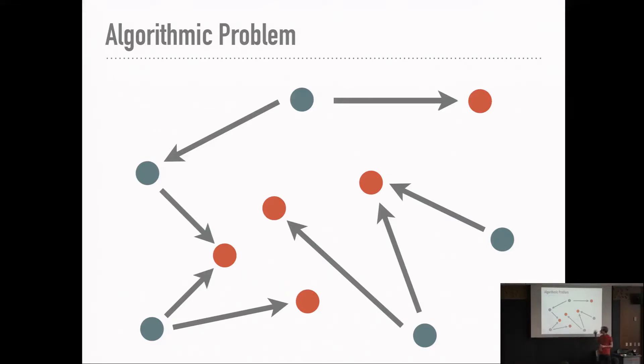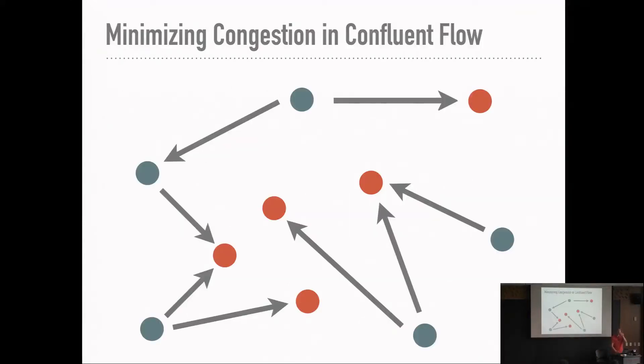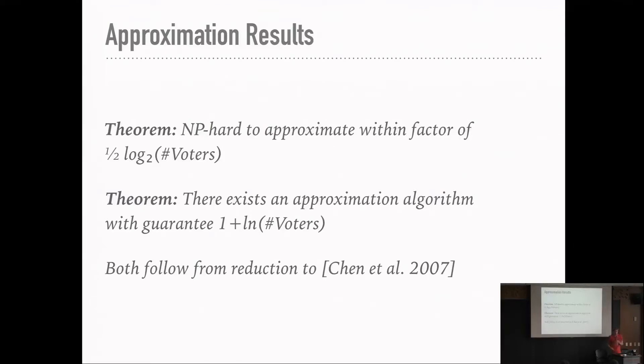If we are concerned about integer linear programs not cutting it, we might consider approximation algorithms, where unfortunately, it is NP-hard to approximate this problem up to within a logarithmic factor, but at least we do have an approximation algorithm that grants us a slightly worse logarithmic factor. Both of these results follow from a reduction to confluent flows, and we're building up on this work by Chen et al. I'd just like to speak about that reduction for a moment. What was the objective? Minimize the weight of the maximum or the maximum weight super voter? Yes, that is the objective that we selected.